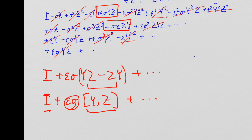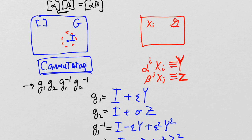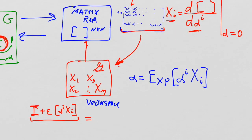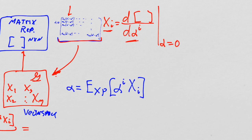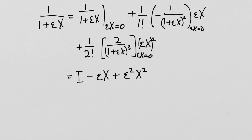We still have to prove that [Y, Z] is actually in the vector space. Most books just say, 'oh, this is an infinitesimal motion, therefore it's in the vector space.' I found this troubling — how do I know this is in the vector space? So I dug up the proof, and because I did it, you're going to have to see it too.